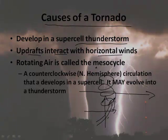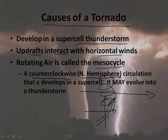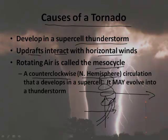The rotating air is called the mesocycle. And then we get a counterclockwise rotation — that's just in the northern hemisphere. In the southern hemisphere, it would be clockwise, viewed from above. This circulation develops in a supercell and may evolve into a tornado.